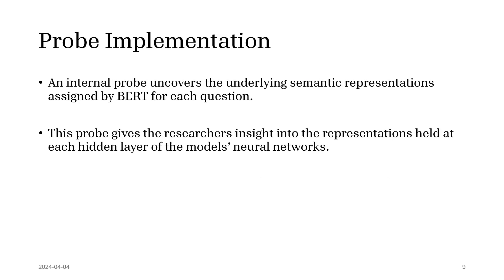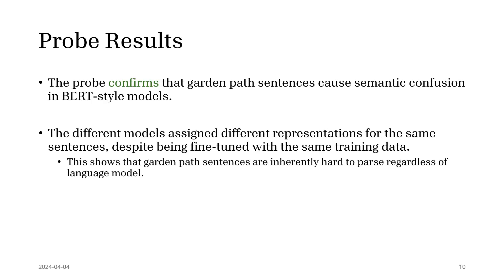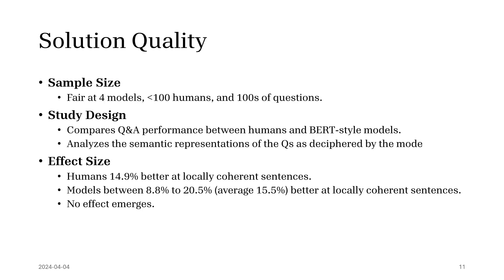They also implemented a probe, essentially examining the hidden layers of each model to see what word mapped to which word. They took the highest performing layer of each model. I think that adds some bias to it, but it does confirm that garden path sentences confuse all the models the same, even after fine-tuning with training data.